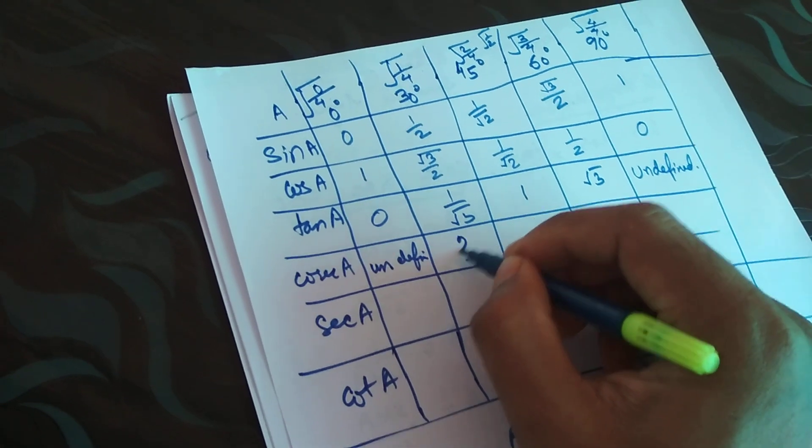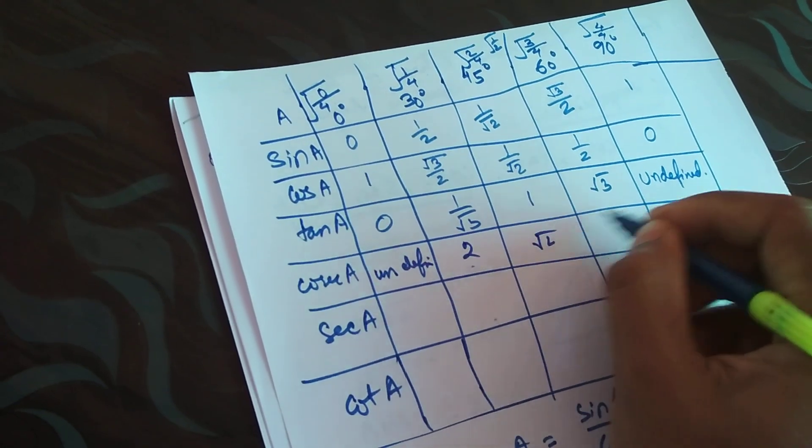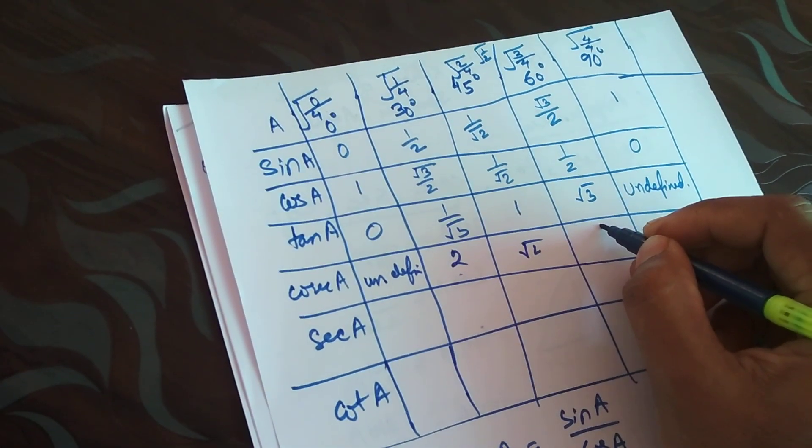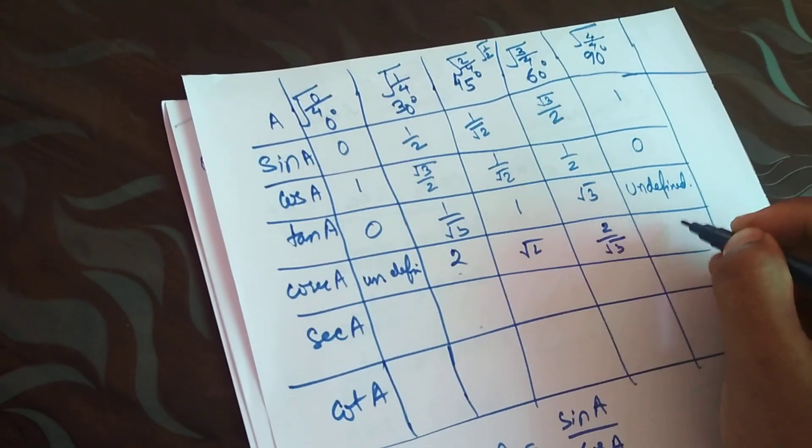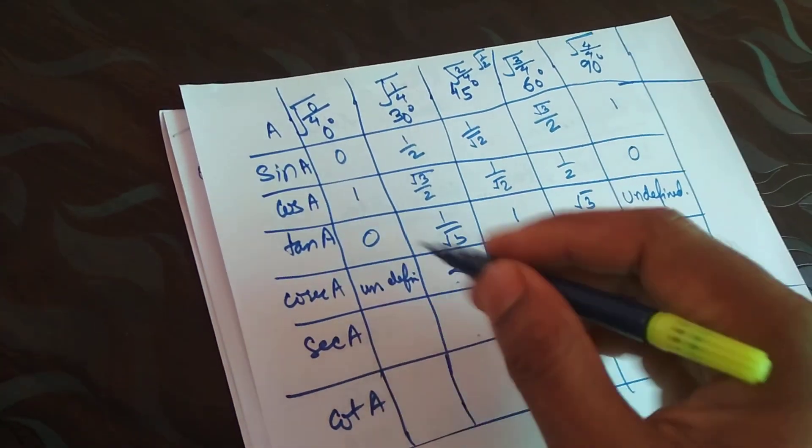Next is 2, then 1 by root 2 becomes root 2, then 2 by root 3, and 1.